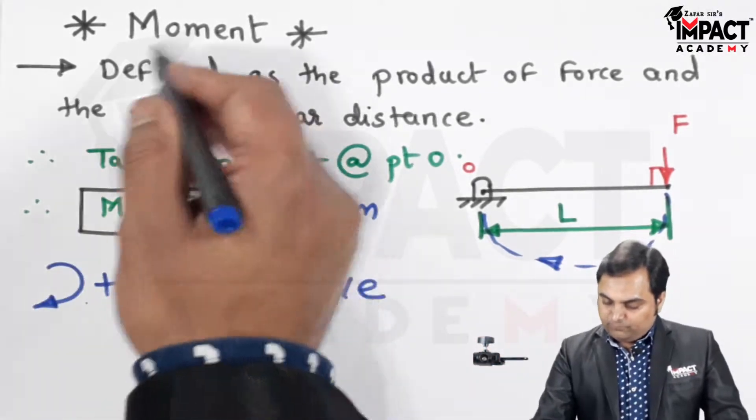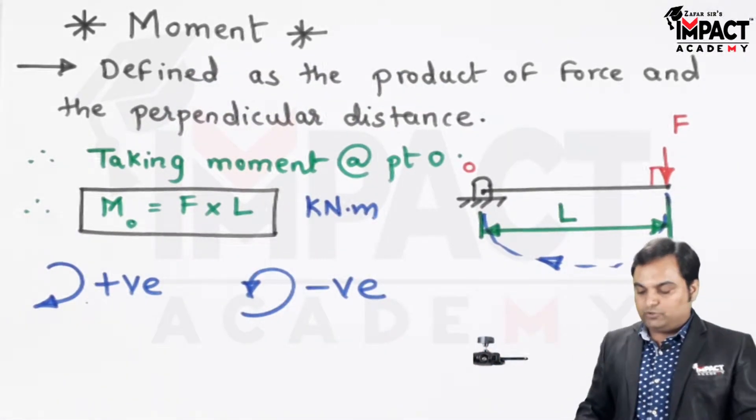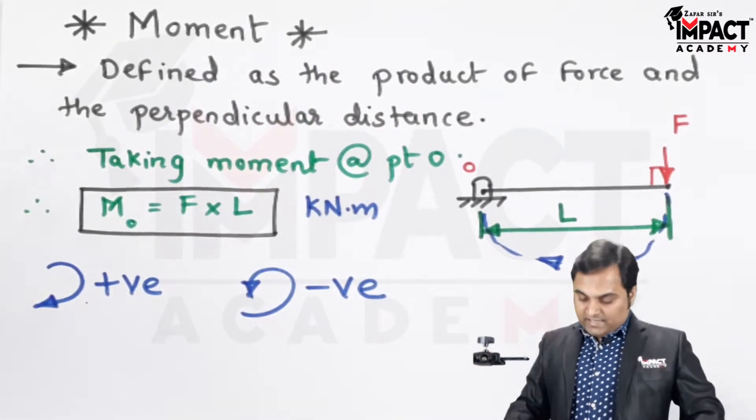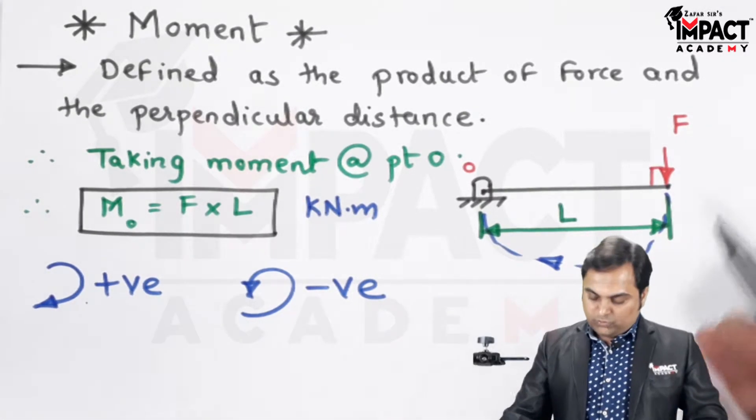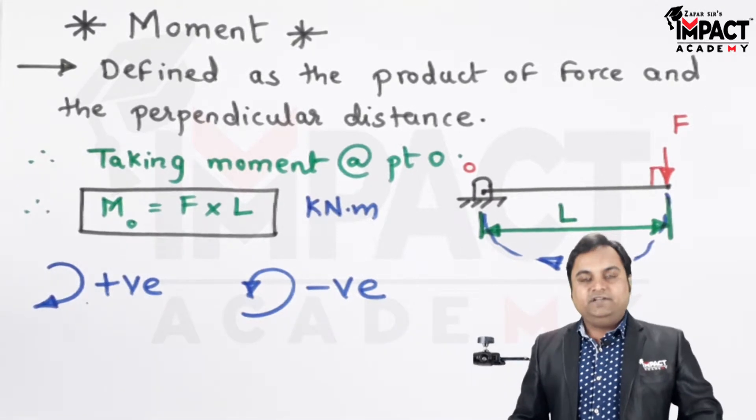So we have seen that moment is defined as the product of force and perpendicular distance. The effect of this moment is to produce either clockwise rotation or anti-clockwise rotation.